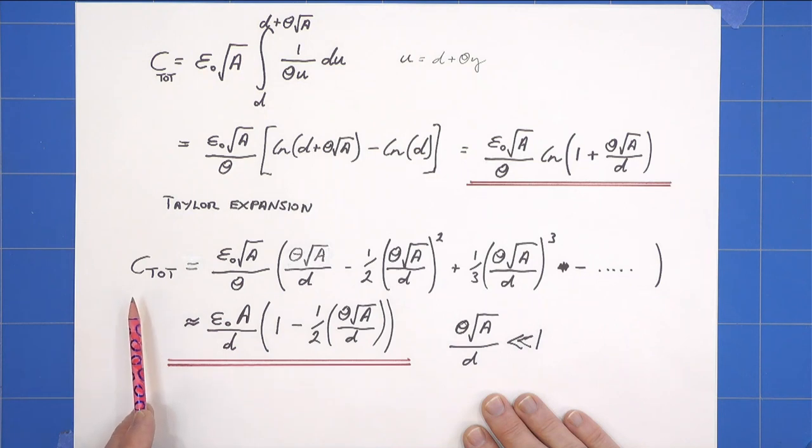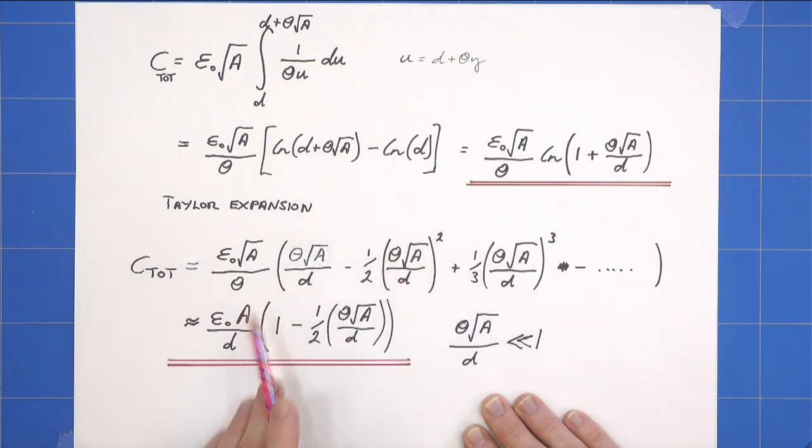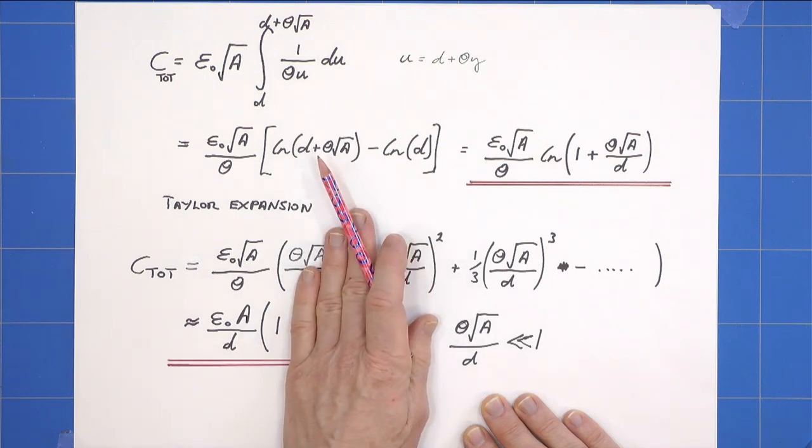From here I take a straightforward Taylor expansion, and then I let theta tend to zero. Specifically, I let theta root A over D become much, much less than one, but clearly A and D remain positive values for us to have a capacitor at all. So when I do that, I get an approximation ignoring the higher order terms here. And when theta truly becomes zero, I can say that C total equals epsilon naught A over D, as I would expect for a parallel plate capacitor.